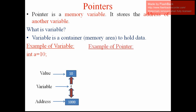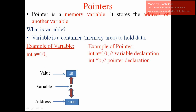Now we'll see the example of a pointer. Here I am creating the same variable 'a' which is having value 10. My objective is to store the address of 'a' into another variable — that is a pointer variable. How can we create the pointer variable? First we have to give the data type, then a space, then we have to give the asterisk (*). This asterisk symbol is very important — it helps us to create the pointer variable.